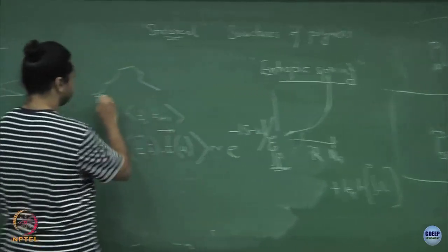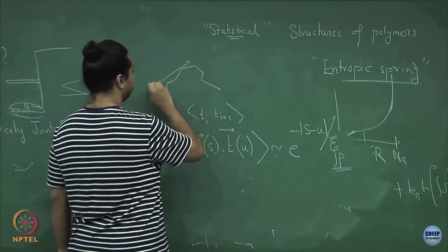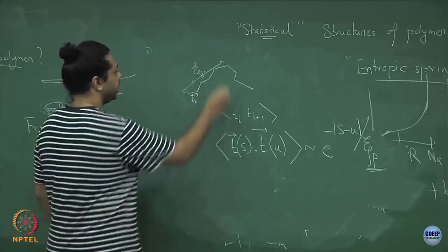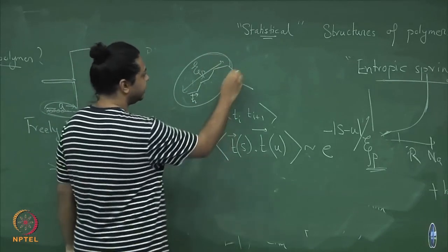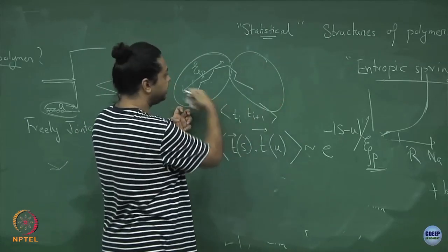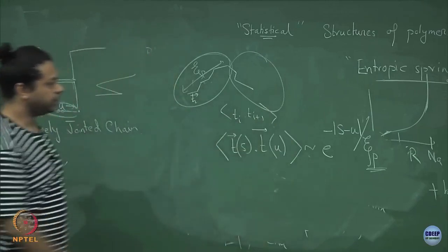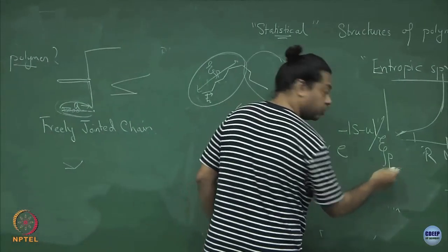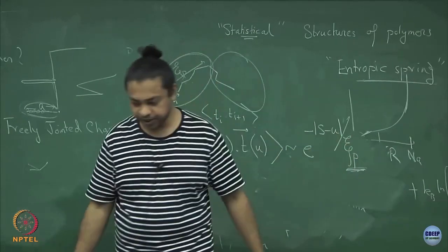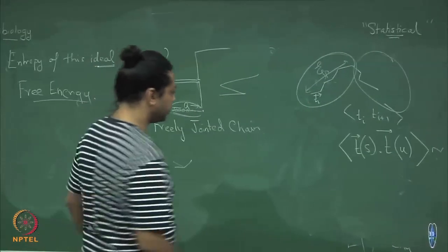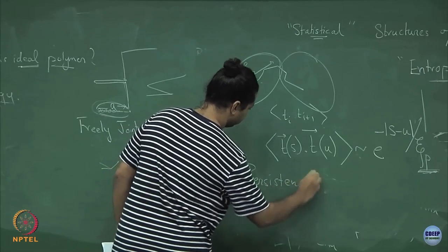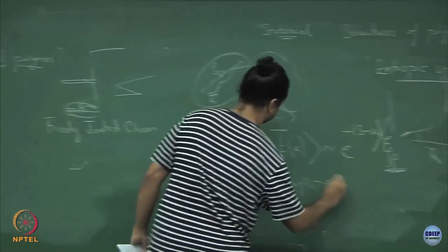As I move further away these correlations decay. The average ⟨T(s)·T(u)⟩ decays as e^(−|s−u|/ξ_p), where ξ_p is called the persistence length — the length over which you retain memory of molecular conformations. If I construct my coarse-grained monomers to have a length scale of order ξ_p, then consecutive coarse-grained monomers no longer retain memory from one to the next, giving me the equivalent freely jointed chain.